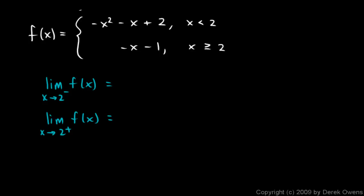Well, as x approaches 2 from the left, this is going to be negative 2 squared minus 2 plus 2. So what is that? That's negative 4 minus 2 plus 2 is negative 4.